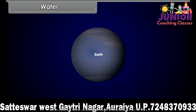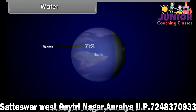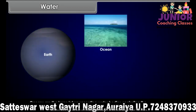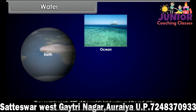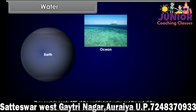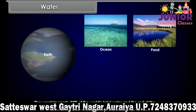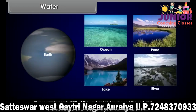About 71% of the surface of the earth is covered by water. Oceans are the large interconnecting water bodies encircling the continents. They contain nearly 97% of the world's total water, and the rest of the 3% of water is available in ponds, lakes, rivers, etc.